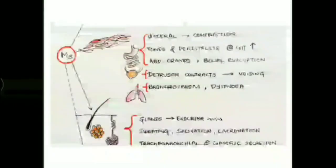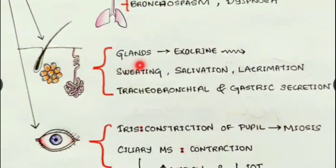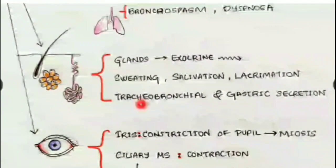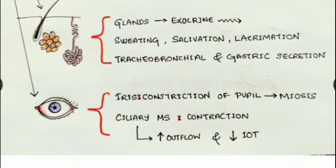M3 receptors located at the exocrine glands cause higher production of exocrine secretions, including sweating, increased salivation, and increased lacrimation. They also cause increased tracheobronchial and gastric secretions.